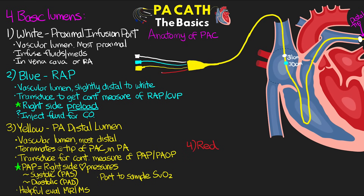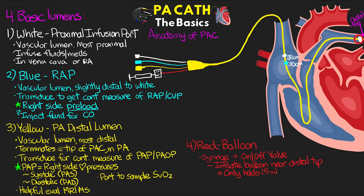The final lumen is the red or balloon port. It has a connected syringe and on-off valve used to inflate the balloon near the distal tip. The balloon only holds 1.5 mL of air, and the accompanying 3 mL syringe has a prevention mechanism that won't allow you to withdraw more than 1.5 mL. It is really important to maintain this specific syringe — if lost, clearly mark the replacement stating only 1.5 mL of air. The balloon guides floating the catheter during insertion.